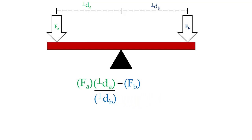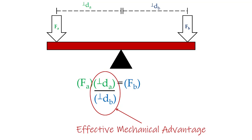If we manipulate the equation to move perpendicular distance B to the other side, we get force A times perpendicular distance A divided by perpendicular distance B equals force B. Let's say force A is our input force and force B is our output force. How much output force we get for a given input force is determined by the ratio of the two perpendicular distances — this is referred to as the effective mechanical advantage.